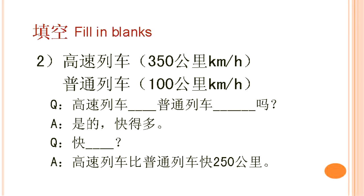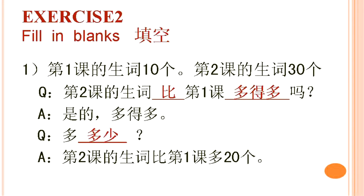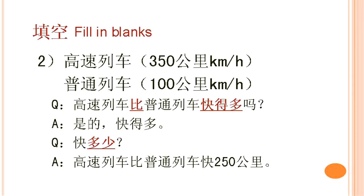Complete the dialogue by filling in the blanks. Let's check the answers: 第二课的生词比第一课多得多吗? 是的，多得多. 多多少? 第二课的生词比第一课多二十个. 高速列车比普通列车快得多吗? 是的，快得多. 多多少? 高速列车比普通列车快二百五十公里.